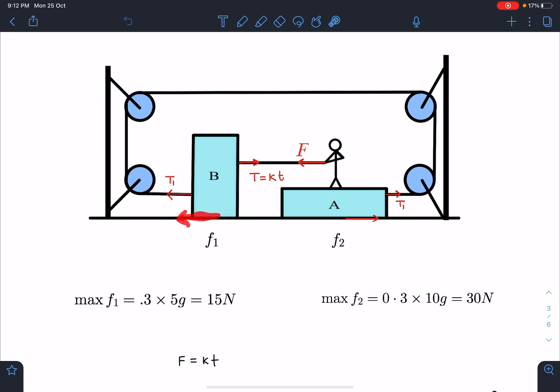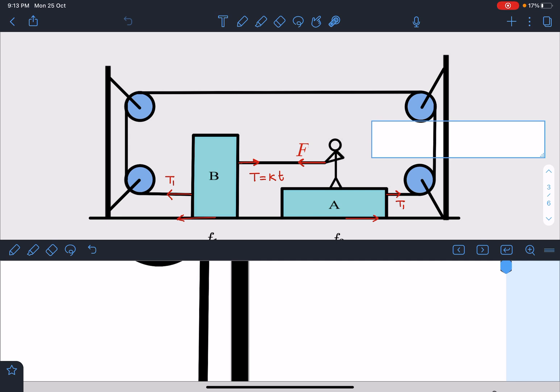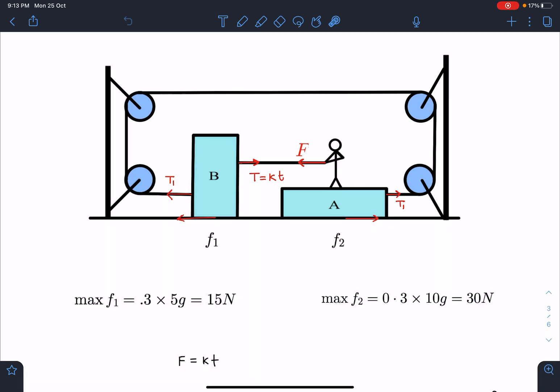In these problems, students normally have a lot of confusion whether tension will develop first or friction will develop first. So tension will come into picture only if this block moves and this will move only if this applied force is exceeding the friction. So first friction is coming.